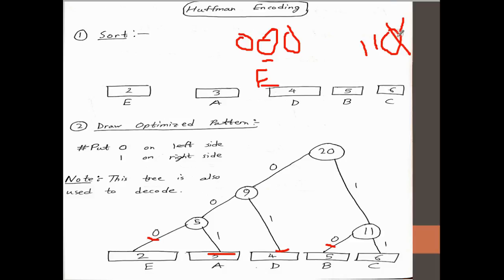1, 1. Only 1, 1. 0 doesn't exist. So 1, 1. That's how I know that this is the only combination that is possible.